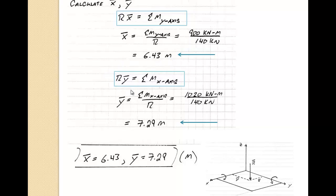And the y coordinate of the resultant force is found using the same form of the formula. So we get y-bar equals the sum of the moments about the x-axis divided by the total resultant for a value of 7.29 meters.